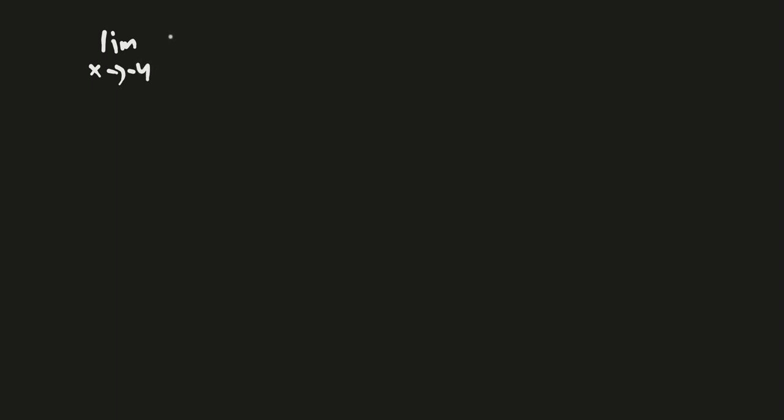In this video we're going to be using the limit laws once again. We're going to be finding the limit as x approaches negative 4 for the square root of x to the fourth power plus 3x plus 12.